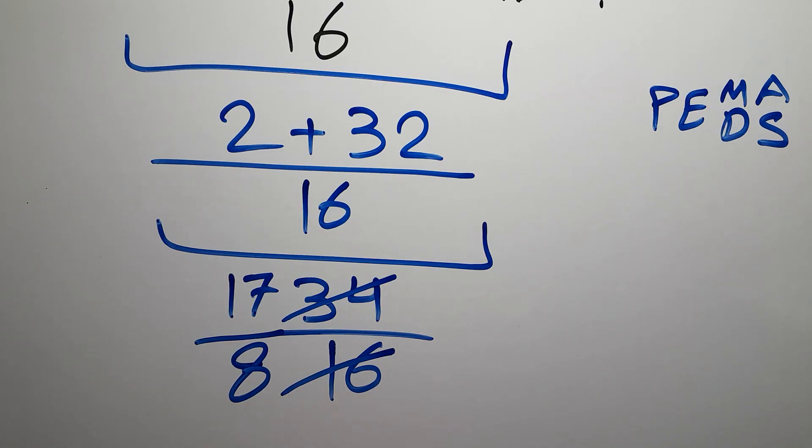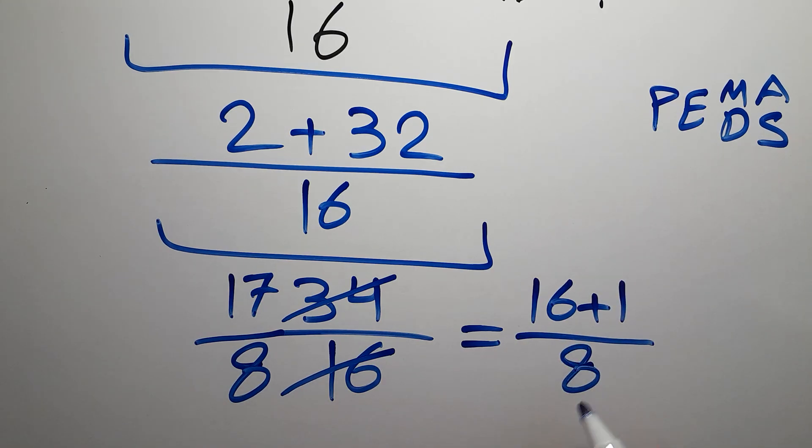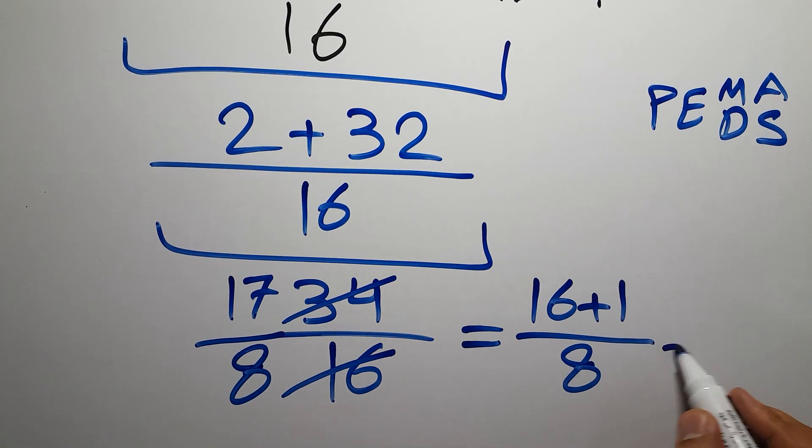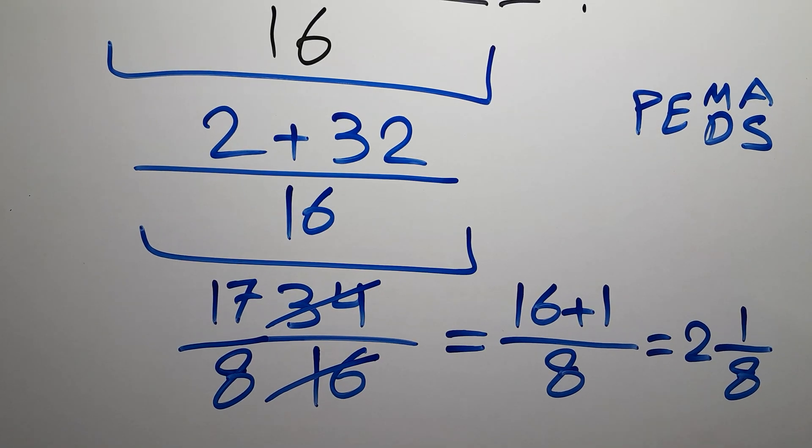Now we can convert this improper fraction to a mixed number. 17 can be written as 16 plus 1 over 8. 16 divided by 8 gives us 2, so 2 and 1 over 8, and this is our final answer to this problem.